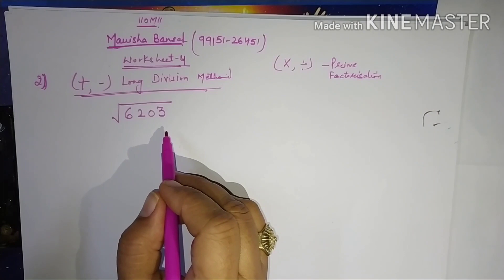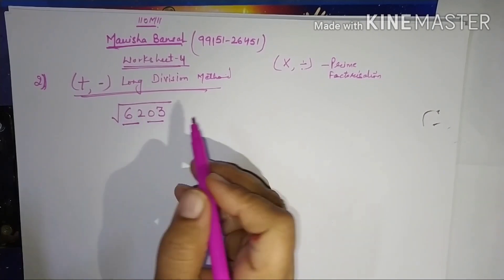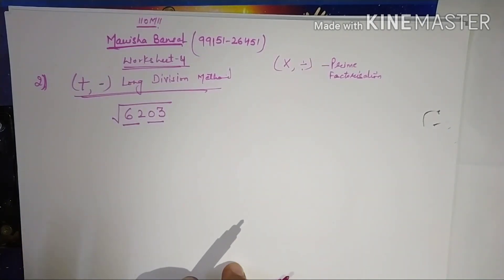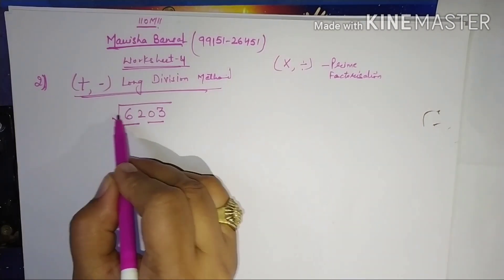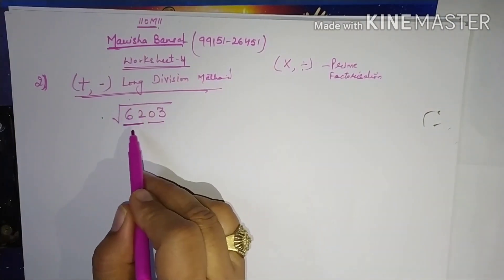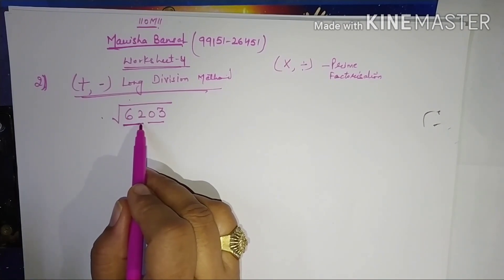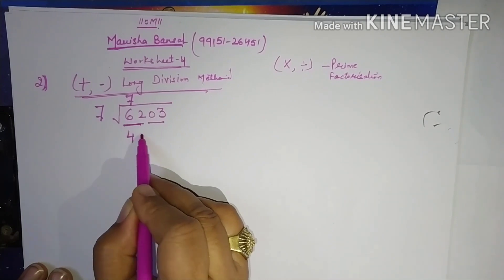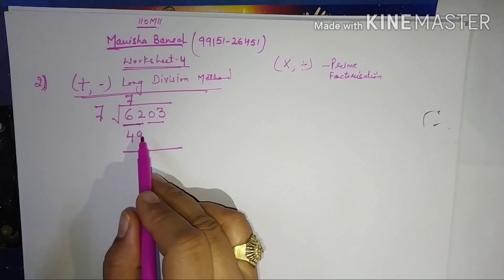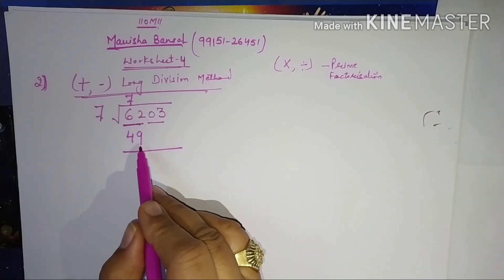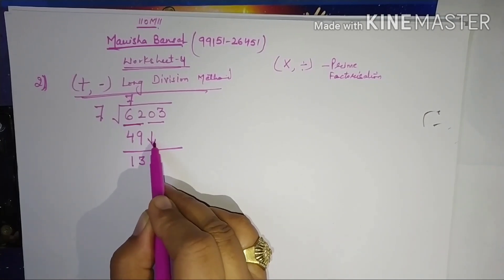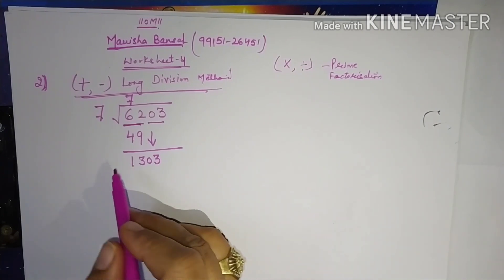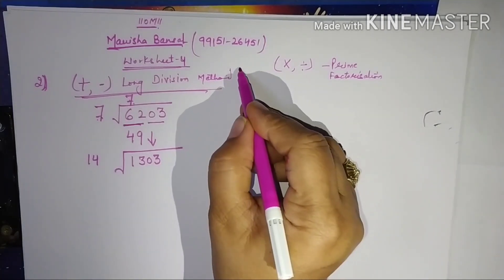The first step is to make the pairing from right to left. I hope you have practiced many sums using long division and know the steps. For 6203, we pair it as 62 and 03. I want the perfect square less than 62 — the perfect squares are 1, 4, 9, 16, 25, 36, 49. After 49 comes 64, so 49 is less. So 7 × 7 = 49. 62 minus 49 = 13. Bring down the next pair: 03, making it 1303.